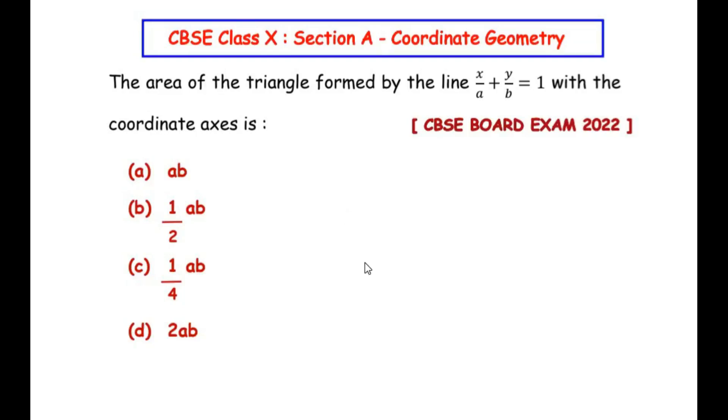Hello and welcome to my channel. In this video, we are going to solve a section A question from the coordinate geometry chapter which appeared in CBSE Board Exam 2022-23. The area of the triangle formed by the line x over a plus y over b equals 1 with the coordinate axes is...